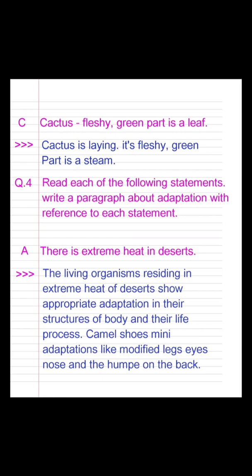Question 4: Read each of the following statements and write a paragraph about adaptation with reference to each statement. Question A: There is extreme heat in deserts. Answer: The living organisms residing in the extreme heat of deserts show appropriate adaptation in their body structures and life processes. Camels show many adaptations like modified legs, eyes, nose, and the hump on the back.